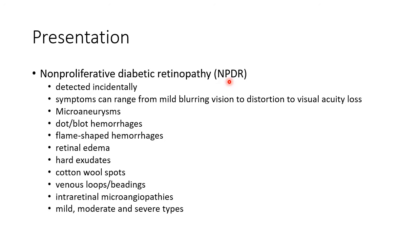Now let us see about the features of NPDR. It may be detected incidentally. Symptoms can range from mild blurring of vision to distortion to visual acuity loss. Other features include microaneurysms, dot or blot hemorrhages, flame-shaped hemorrhages, retinal edema, hard exudates, cotton wool spots, venous loops or beading, and intra-retinal microvascular abnormalities.